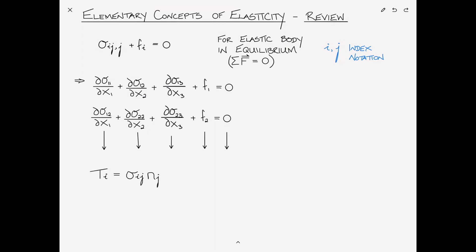In addition, you would have encountered the formula that the traction on a surface, tᵢ, is equal to the stress σᵢⱼ times n sub j. σᵢⱼ is the stress and n sub j is the normal vector on the surface at that location. This is known as Cauchy's formula. If you draw a surface with a normal vector, this formula gives you the surface traction at that point. A traction is a pulling force.